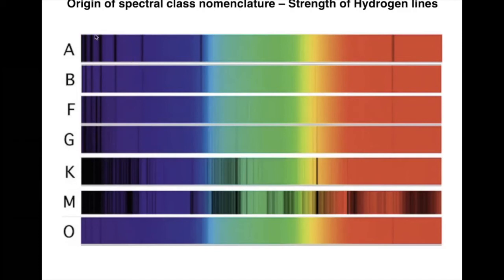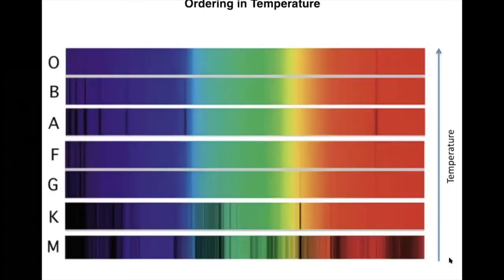As it turns out, the sequence is actually a temperature sequence. The temperature increases from the M-type to the O-type, with O and B stars out of place because increasing ionization with increasing temperature starts to weaken the hydrogen lines.